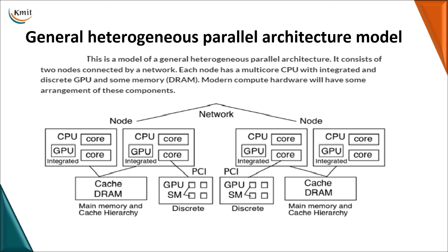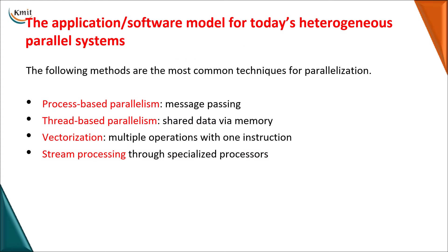You can implement a parallel architecture that combines all of these models. When you combine them: network-shared becomes distributed, single alone becomes shared memory, and the others are your special processors. All of them can be integrated into a single parallel architecture model.